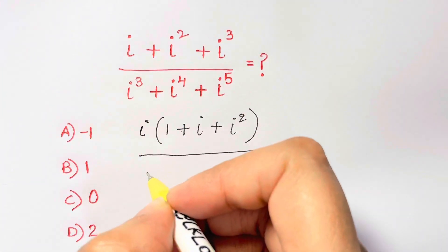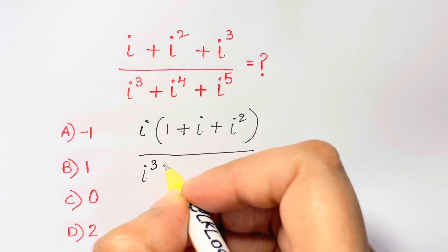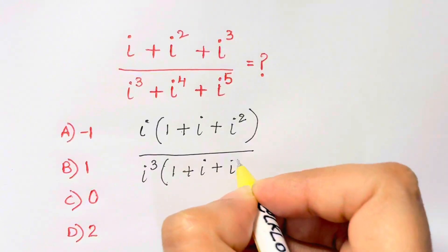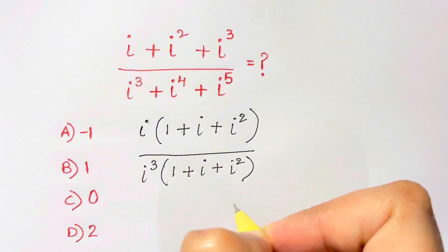I have i cubed, I'm taking out common. So I'm left with 1 plus, if i to the 4 divided by i cubed is i plus i squared, that's what I get.